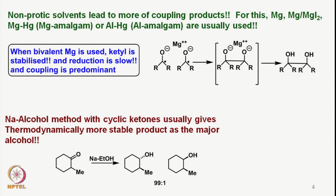Non-protic solvents lead to more coupling products. For coupling products to form, the protonation of the anion should not take place until it undergoes coupling, so we preferably use a non-protic solvent. We can always protonate towards the end of the reaction during workup. For this coupling to take place, we need to use magnesium, magnesium iodide mixture, magnesium amalgam, or aluminum amalgam.